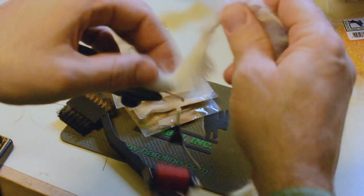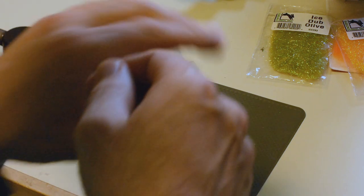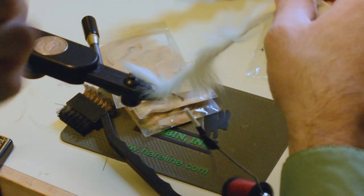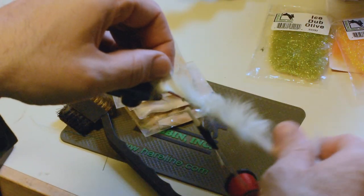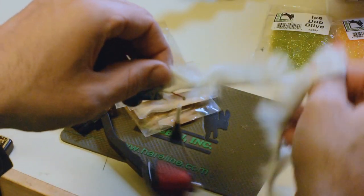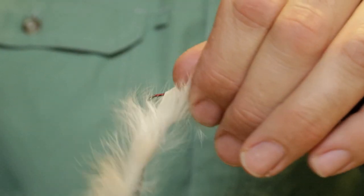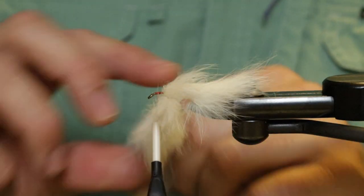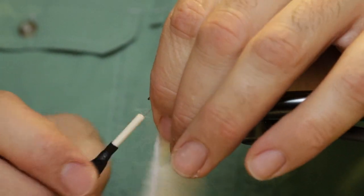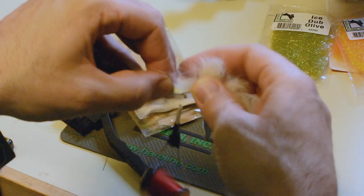And then we're just going to wrap this rabbit fur forward. Touching turns. I really want to fold this rabbit fur back. This is a good dead drift fly for Alaska. And once we get to about where that head is, start pulling some of that hair back.